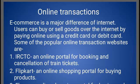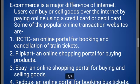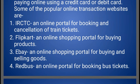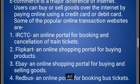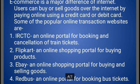Some popular online transaction websites are: IRCTC, which is an online portal for booking and cancellation of train tickets; Flipkart, Amazon, and Snapdeal, which are online shopping portals for buying products; eBay, an online shopping portal for buying and selling goods; and Redbus, an online portal for booking bus tickets. These are different kinds of websites that provide different facilities, and they are called e-commerce websites.